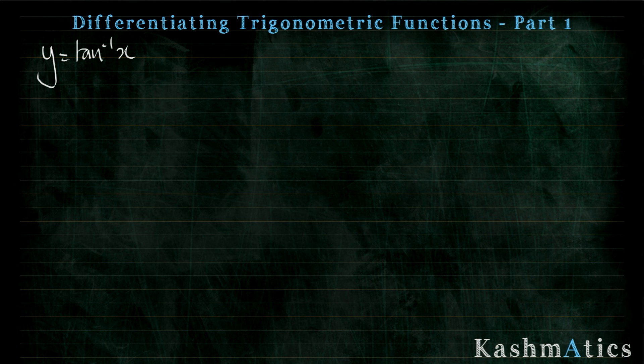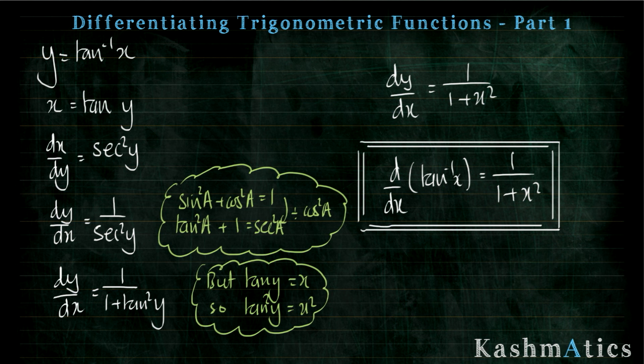Here is the inverse tan derivative: d by dx of the inverse tan of x equals one over one plus x squared. I don't have to bother with the graph this time because there's no plus or minus square root — and looking at this expression, one is positive and x squared will always be positive, so the whole thing is always going to be positive. No ambiguity in this case.